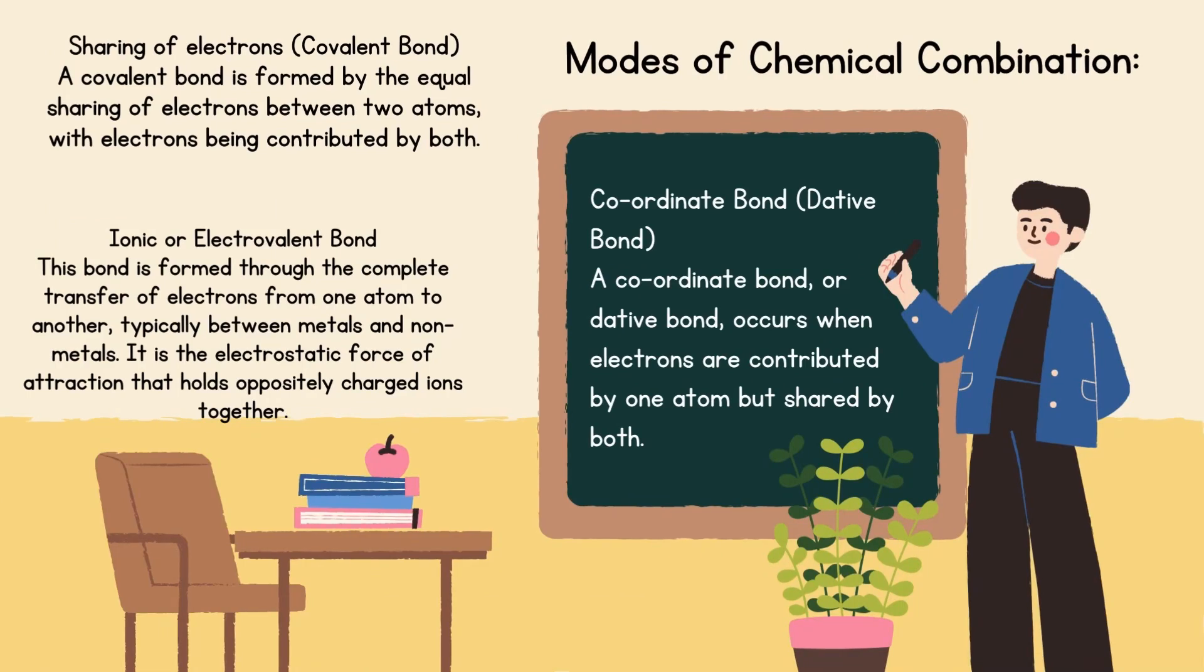Next is modes of chemical combinations. First is sharing of electrons, covalent bond. A covalent bond is formed by the equal sharing of electrons between two atoms, with electrons being contributed by both. Second is coordinate bond, dative bond. A coordinate bond or dative bond occurs when electrons are contributed by one atom but shared by both. Third is ionic or electrovalent bond. This bond is formed through the complete transfer of electrons from one atom to another, typically between metals and non-metals. It is the electrostatic force of attraction that holds oppositely charged ions together.